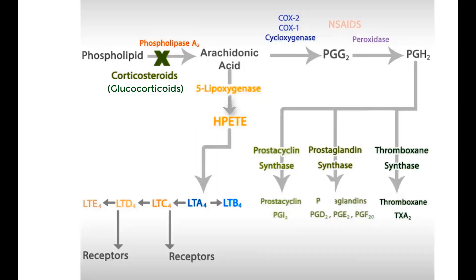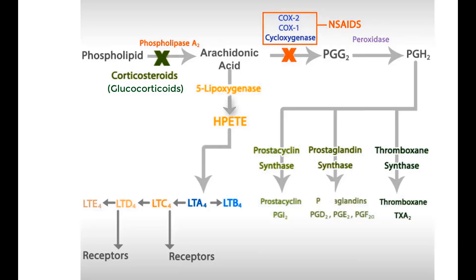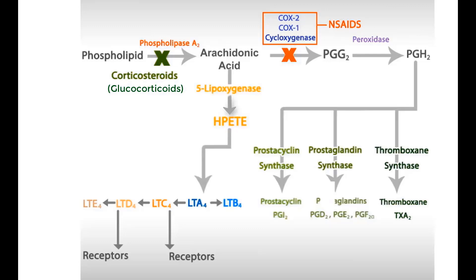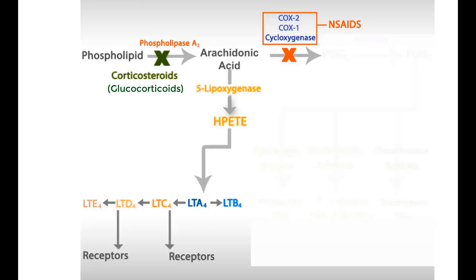The non-steroidal anti-inflammatory drugs, abbreviated as NSAIDs, unselectively inhibit both COX-1 and COX-2 isoenzymes. Remember, glucocorticoids are steroidal anti-inflammatory drugs, whereas COX inhibitors are non-steroidal anti-inflammatory drugs. NSAIDs inhibit the production of all prostanoids, including prostaglandin, thromboxane, and prostacyclin.